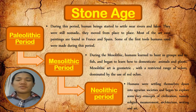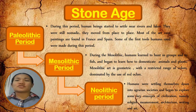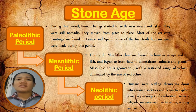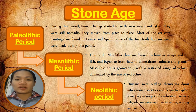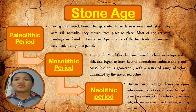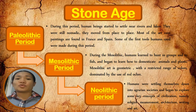So class, our first topic for this week is about Stone Age. In Stone Age, we have three periods: number one, Paleolithic period; number two, Mesolithic period; and number three, Neolithic period. During the Paleolithic period, human beings started to settle near rivers and lakes, meaning they started to live near rivers and lakes. They were still nomadic — people that move from one place to another.